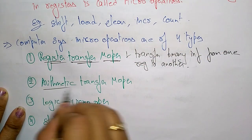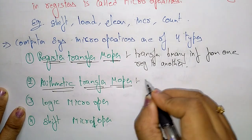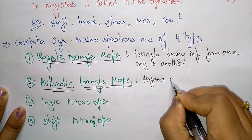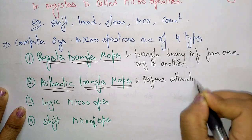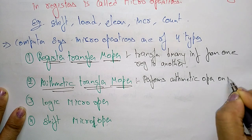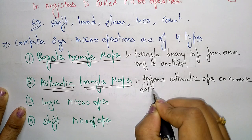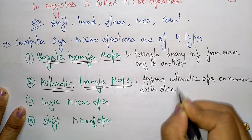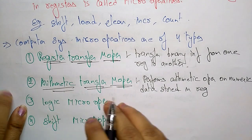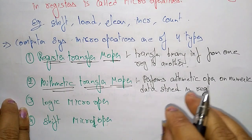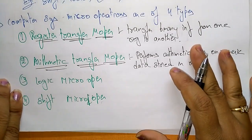Arithmetic transfer micro operations perform arithmetic operations on numeric data stored in registers. The registers store numeric values, and the arithmetic micro operations perform computations on that numeric data.